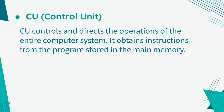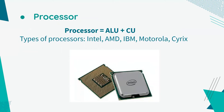Moving on to the next part, the control unit, the CU controls and directs the operations of the entire computer system. It obtains instructions from the program stored in the main memory. The processor is a combination of the ALU and the CU. Some types of processors include Intel, AMD, IBM, Motorola, and Cyrix.